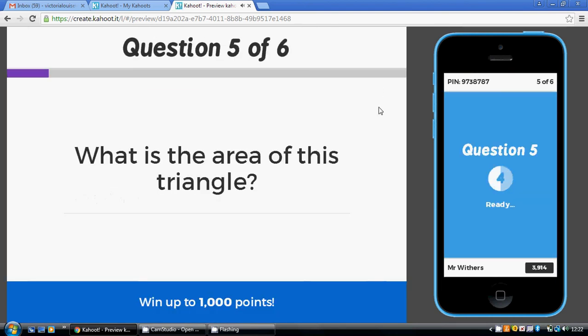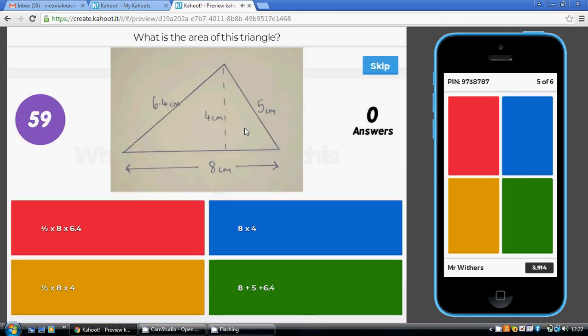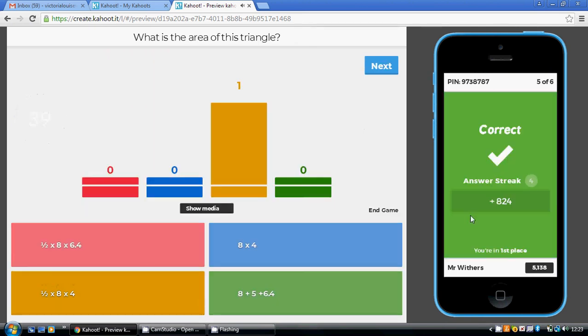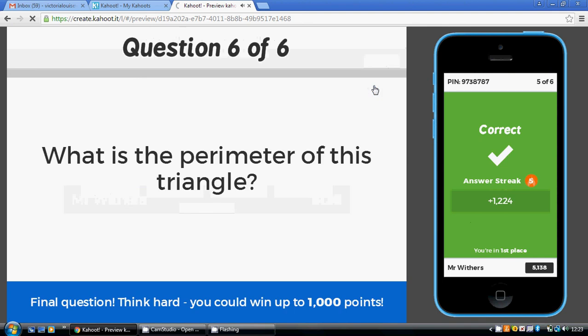Two to go. Question five: what is the area of this triangle? The area of the triangle - remember the space inside - area for a triangle is half times base times height. Now be careful, it's the perpendicular height, the half straight up. So it's going to be half times the base, which is eight, times the four. So half times eight times four, which is the gold option.